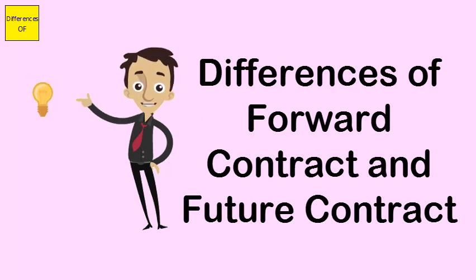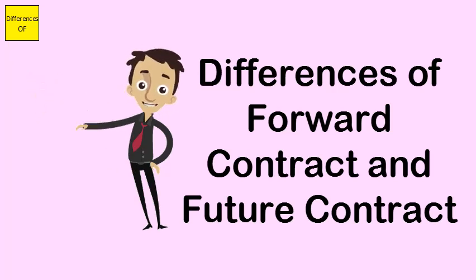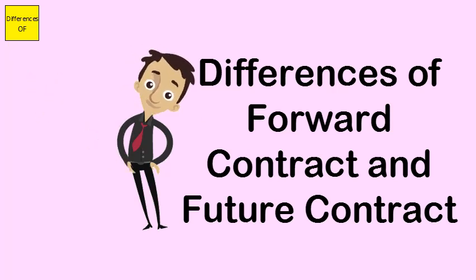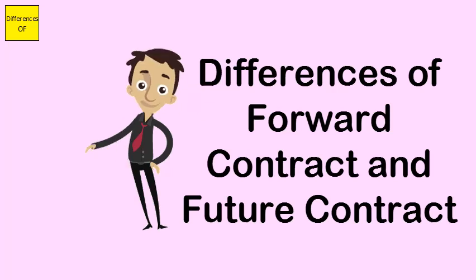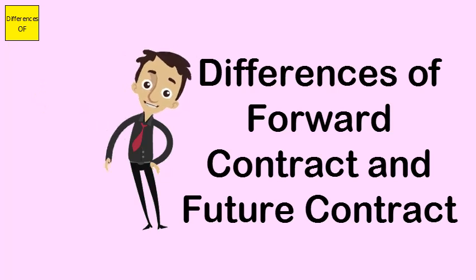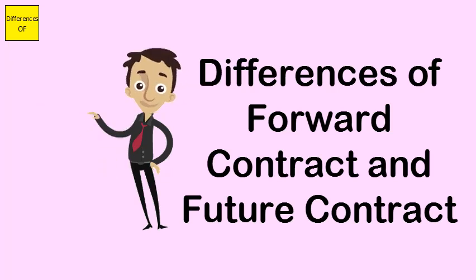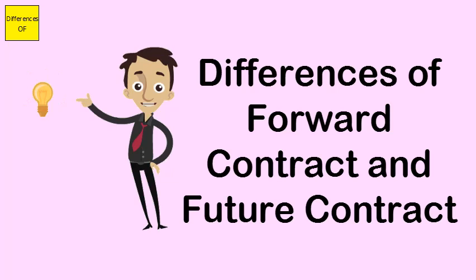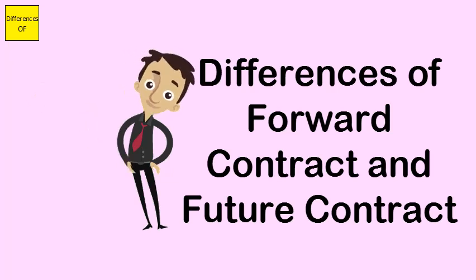A forward contract is employed by hedgers, while a future contract is employed by speculators. Both contracts are similar in nature because they both offer the same function — the ability to buy and sell a specific type of asset at a specific time and price.